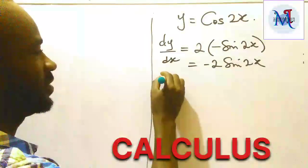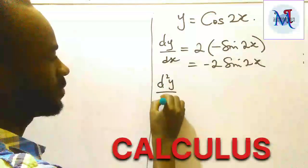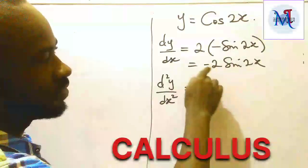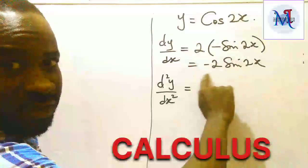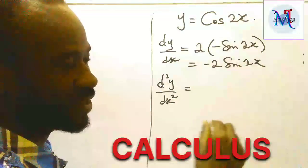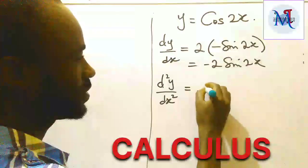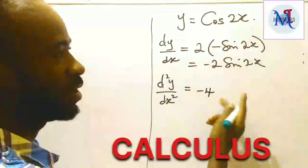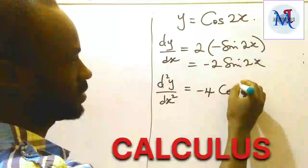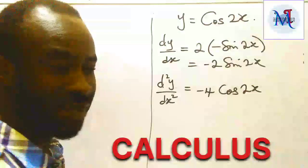Now for the second derivative, we differentiate this result. If we differentiate 2x, we get 2. Multiply that by -2, which gives us -4. Differentiate sine, which gives us cosine. So d²y/dx² = -4 cos 2x.